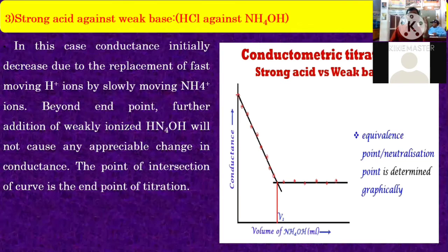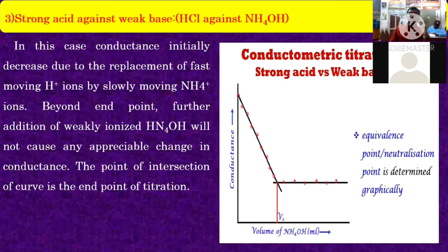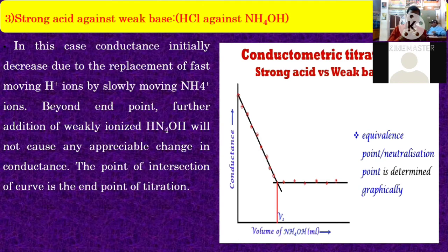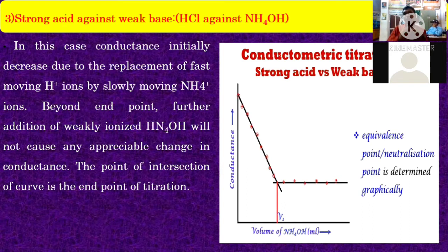With strong acid, the pH is very low. When some amount of NH₄OH is added, the concentration of H⁺ ions is very high initially. The replacement of H⁺ ions proceeds slowly by NH₄OH. Initially conductance decreases due to replacement of fast-moving H⁺ ions by slowly-moving NH₄OH ions.